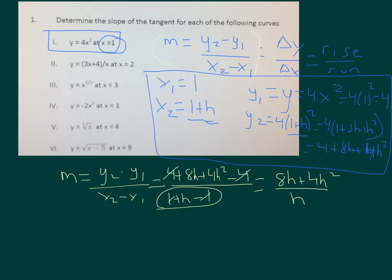Now to find the slope at just one point, that's where the limit idea comes in. We say the limit as h gets closer and closer to 0. So in other words, there's a smaller and smaller difference between the point at x equals 1 and the next point that we're using to find the slope of 8h plus 4h squared over h.